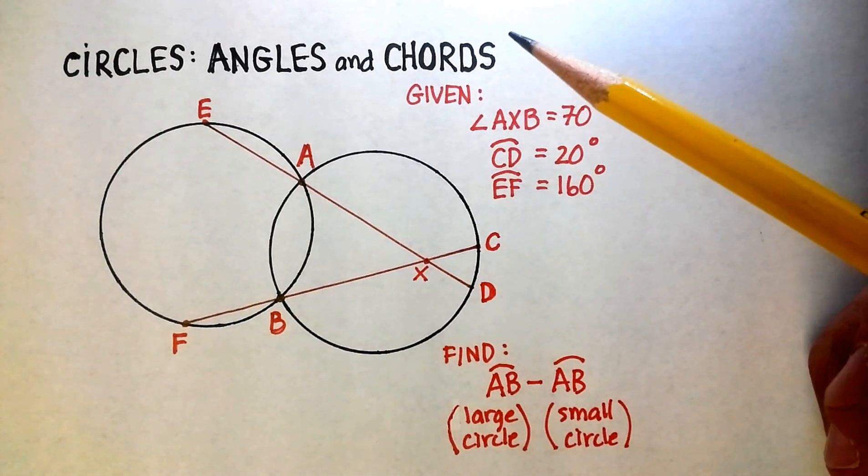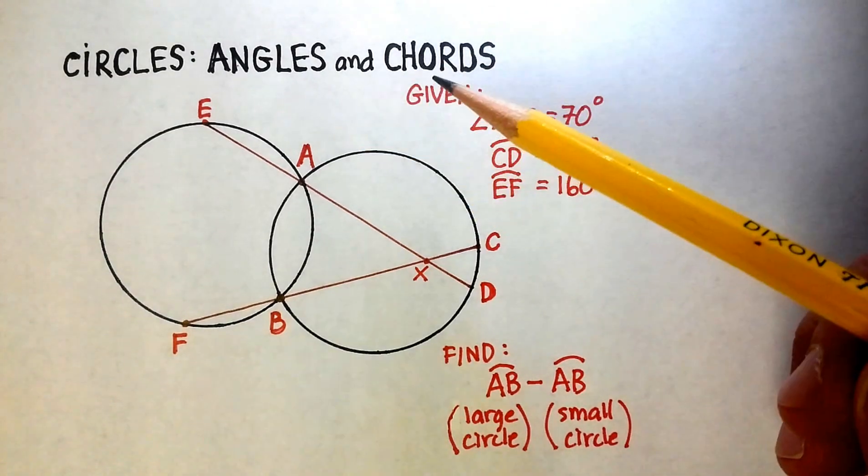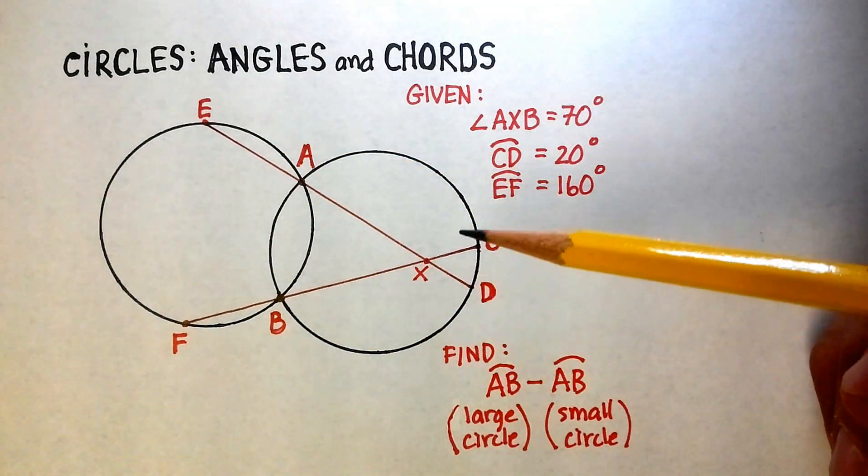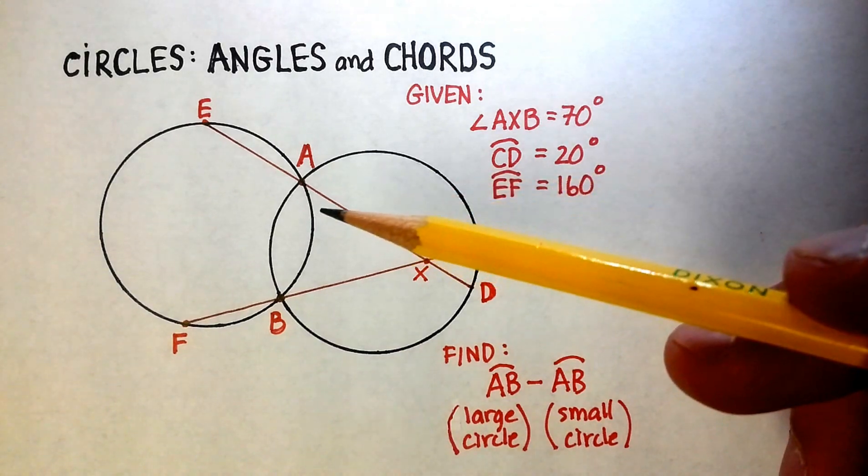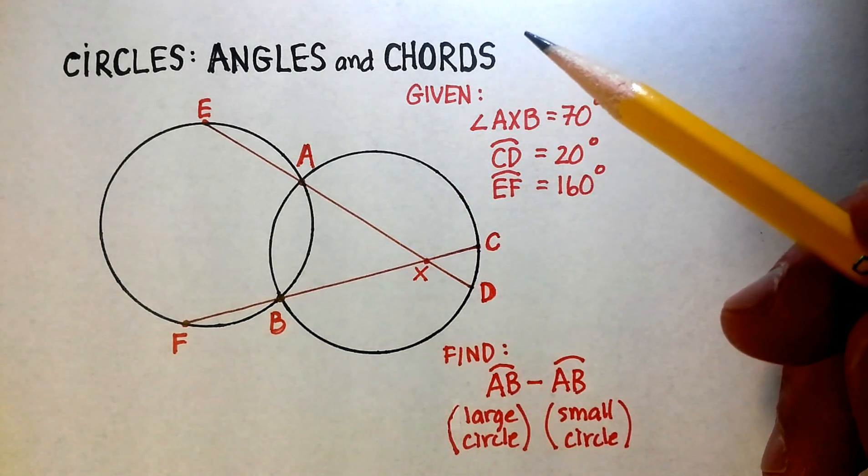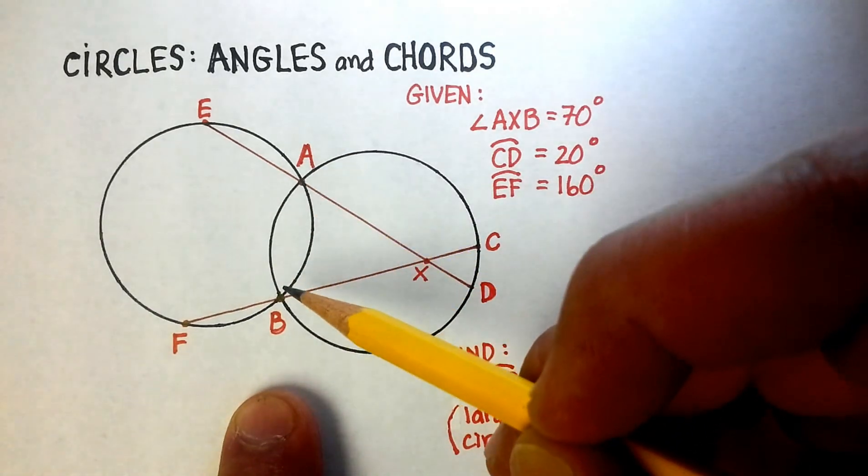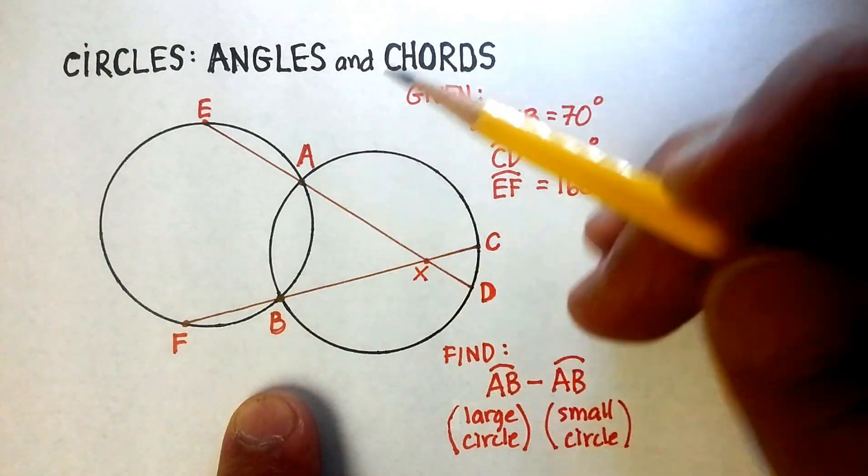Okay, in this video we're going to work out a problem with angles and chords with two intersecting circles. Now let's look specifically what this problem is asking us to do. We have two circles that intersect at points A and B, so there's two intersections here, overlapping circles.